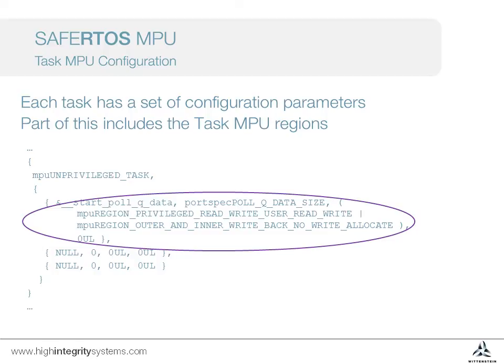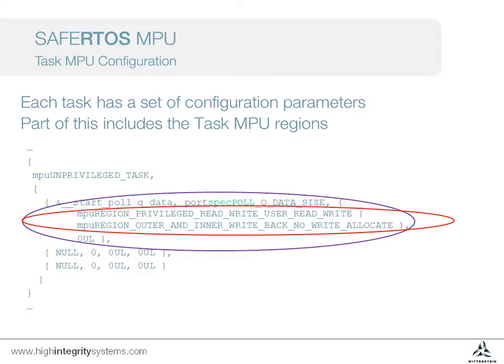Let's look at the first region we have configured. The first parameter is the start address of the MPU region — we'll see shortly how the variable used here is externally defined in the linker script. The second parameter is the MPU region size, which needs to be large enough to contain all the data we wish to allow access to, and must meet architectural limitations. For example, in the Cortex-M3, this is a power of 2 size in bytes with alignment, and a minimum size of 32 bytes. The third parameter is the MPU region permissions — for example, whether this region is read only or both read and write access is permitted. We can also set caching policies for this variable. More details about these parameters are available in the ARM Cortex-M3 MPU documentation.